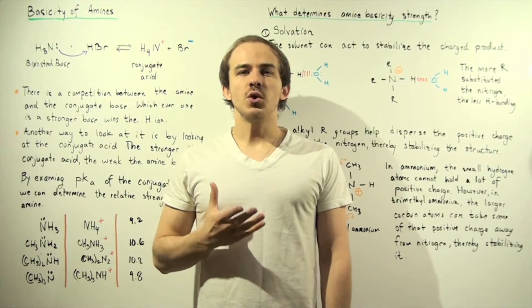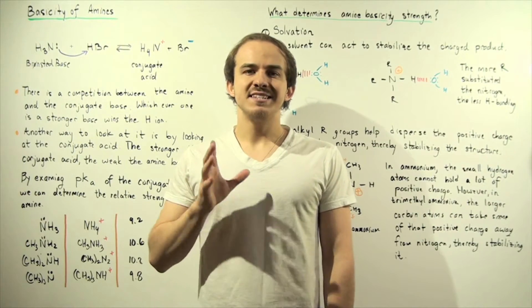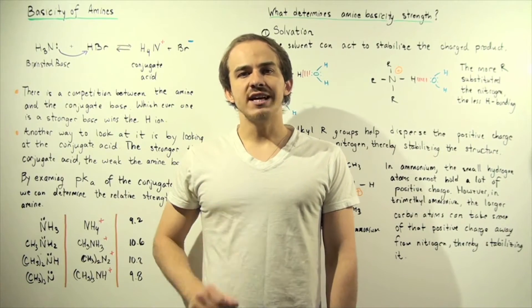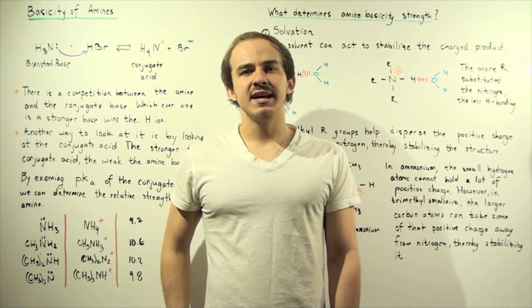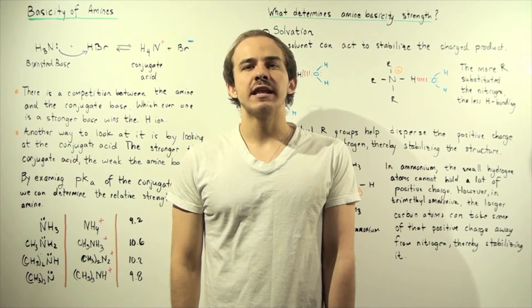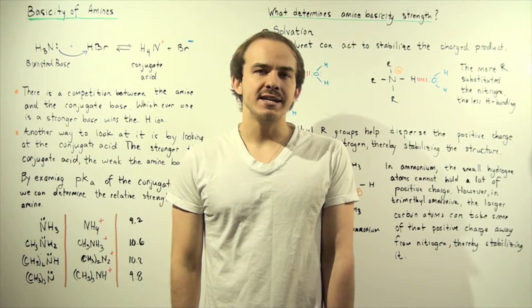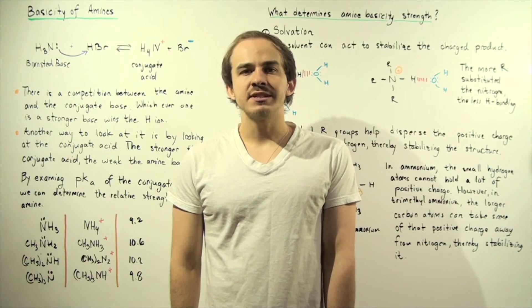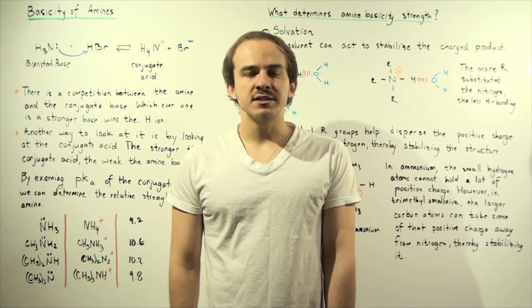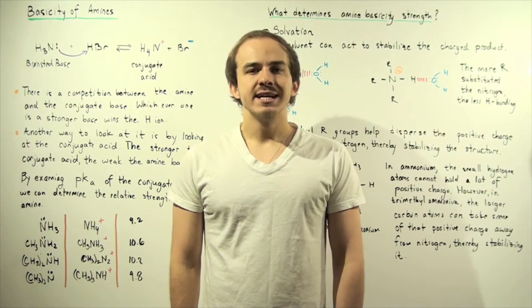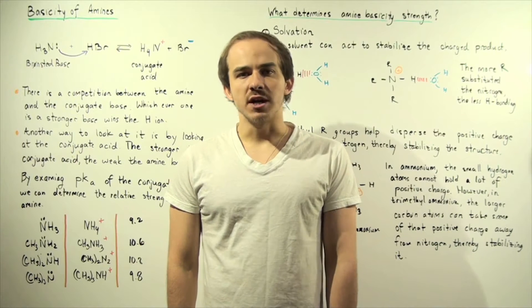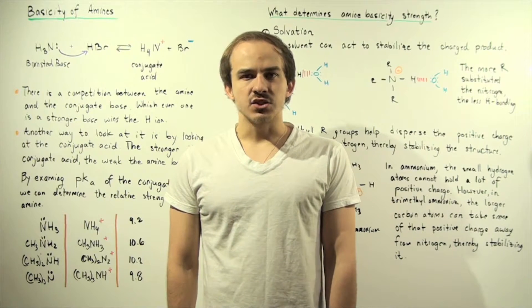In this lecture, we're going to discuss the basicity of amines. Recall that an amine contains a lone pair of electrons on the nitrogen atom, and that means amines can act as Brønsted bases, taking H atoms away from Brønsted acids.